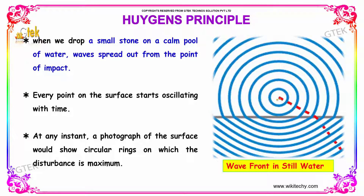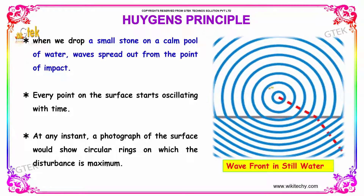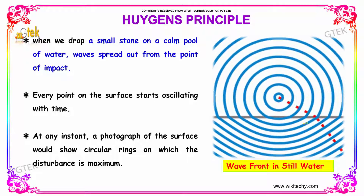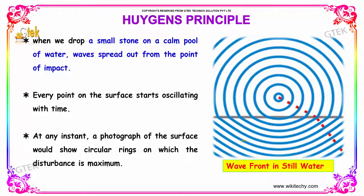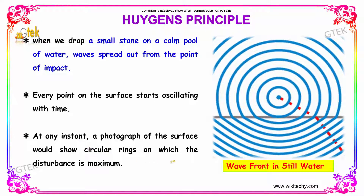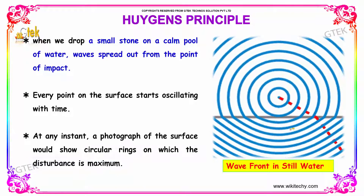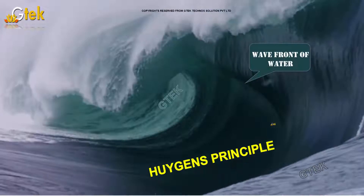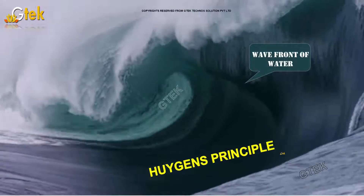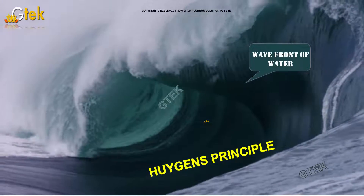If you see here, once a small stone is thrown over a point, you can find how the waves spread out. Every point on the surface starts oscillating with time. At any instant, a photograph of the surface would show circular rings on which the disturbance is maximum. This is the concept of Huygens' Principle in our real life.